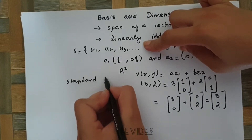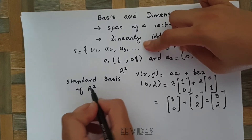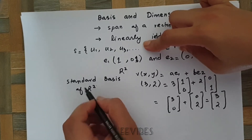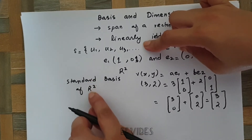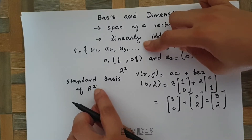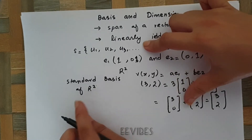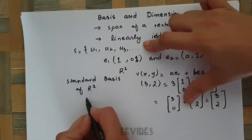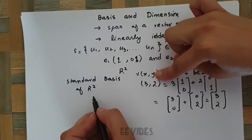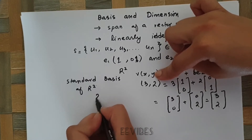The standard basis of R²: here R represents the real numbers and 2 means two components. So we generate vectors having two components in real numbers. Since two vectors are involved in generating these two-component vectors, the dimension of this vector space is equal to 2.